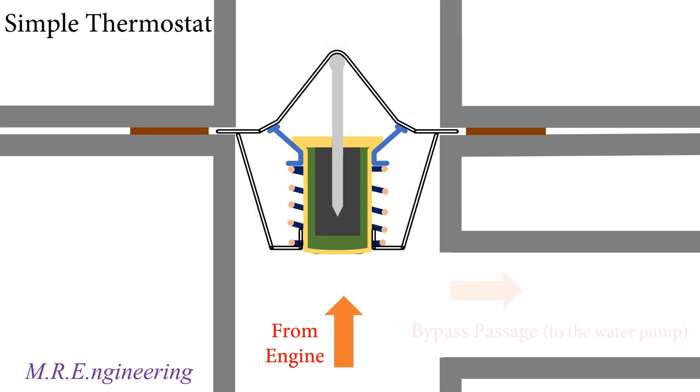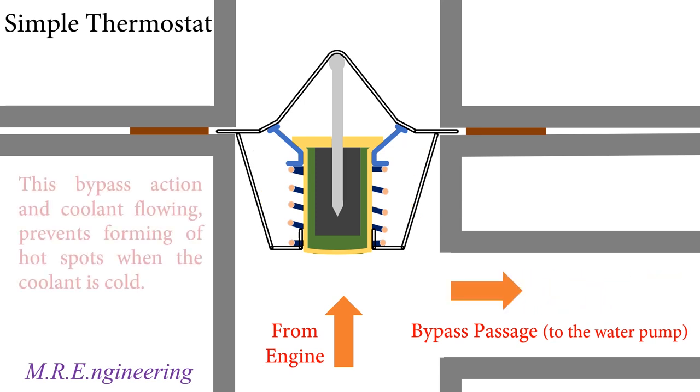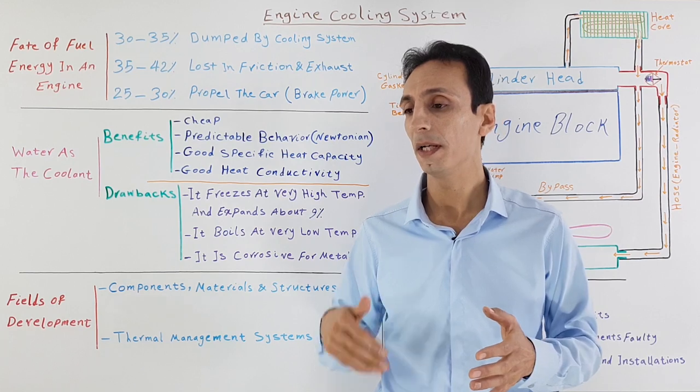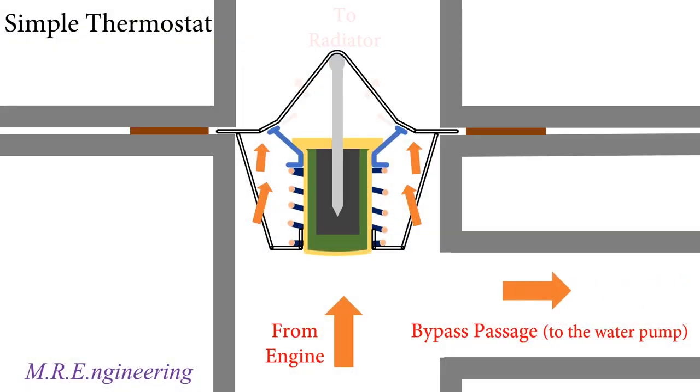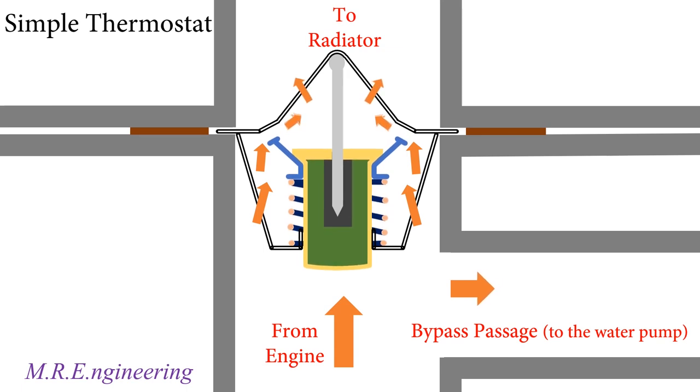The spring forces the valve in closed position, so coolant passage to the radiator is closed and the coolant goes into a bypass passage to circulate in the engine. This bypass action prevents forming of hot spots when the coolant is cold. By raising engine and coolant temperature, the wax starts to liquefy at a certain pre-adjusted temperature, expands, and pushes on the diaphragm that acts on the piston to move the valve. At the specific temperature, the valve is in fully open position and coolant can flow freely to the radiator.